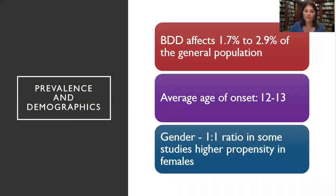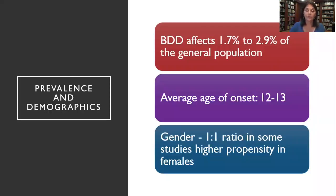BDD affects about 3% of the population, and it's worldwide — not culture specific. We see roughly the same percentage of people affected by BDD all around the world. It usually starts around ages 12 and 13. We're seeing more and more younger children affected — some get preoccupied as young as four, five, or six years of age, talking about their bodies and finding fault with a particular part.